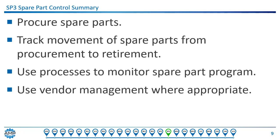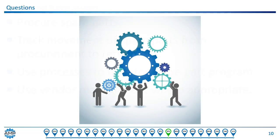To summarize, the spare part control function requires processes to procure spare parts, to track movements of spare parts from procurement to retirement, to monitor the spare part program, and use vendor management when appropriate. This concludes the spare part control process descriptions presentation. Thank you for participating.